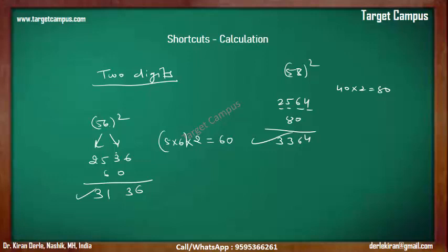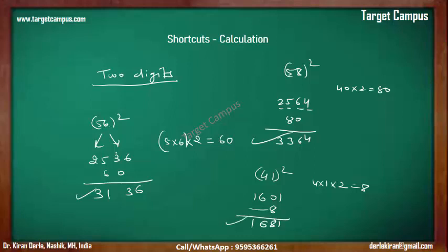This is 41 squared. Left part: 4 squared is 16. Right part: 1 squared is 01. Middle: 4 into 1 is 4, made twice is 8. We write 8 in the middle. So the answer is 1681.